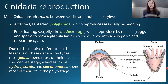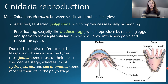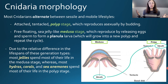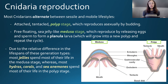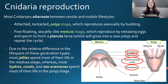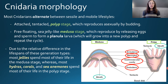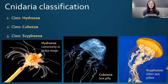Most jellies spend most of their life in the medusa stage, while most hydrozoans, corals, and sea anemones spend most of their life in the polyp stage attached to a substrate. These stages may seem very different, but if we flip the polyp over and detach it from its surface it looks quite like a medusa. They both share an ectoderm, mesoglia, digestive cavity, endoderm, and a mouth or enteron, so they're very similar despite their stark differences in lifestyle.